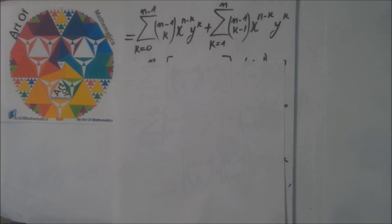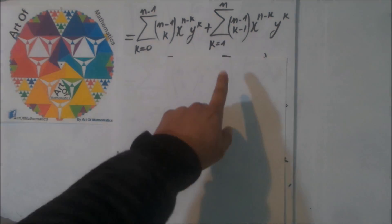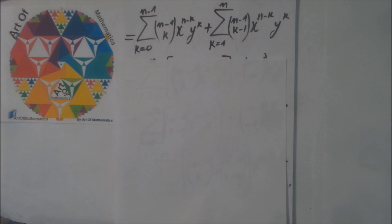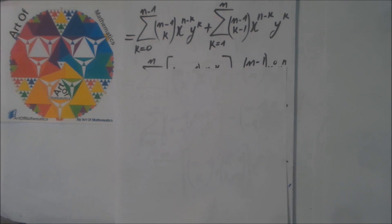Here we have made just a simple change of variable. k here is equal to j plus one for the previous expression. It's just a simple change of variable.